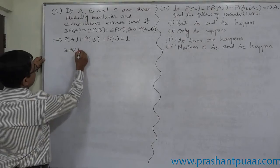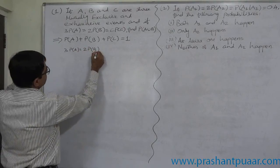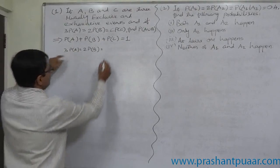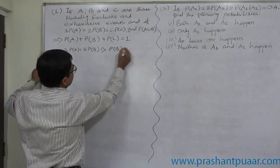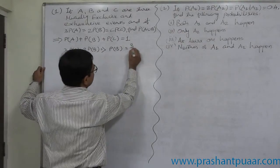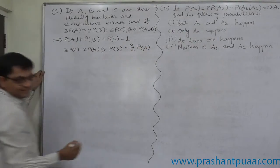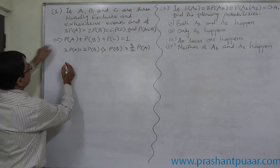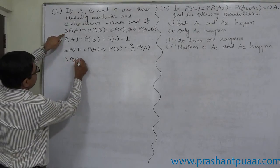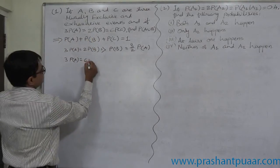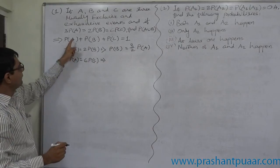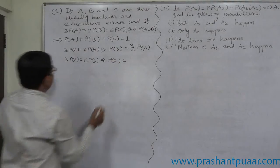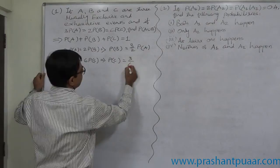Now the relationship: 3P of A equals 2P of B, which means P of B equals 3/2 · P of A. Similarly, 3P of A equals 6P of C, which means P of C equals 3/6 · P of A.